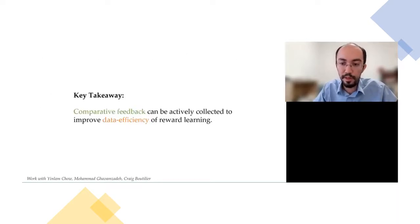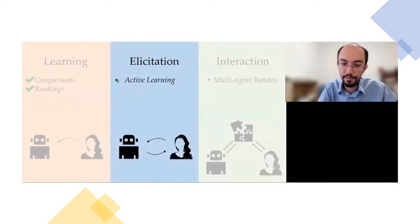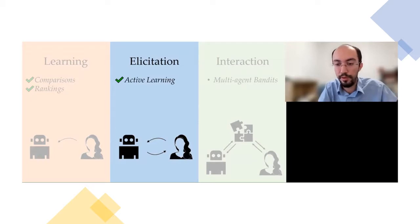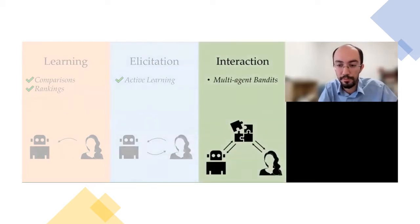The key takeaway is that comparative feedback can be actively collected, and we can use different acquisition functions depending on our objective. So we've seen how active preference-based learning can help us better learn models of human behaviors, rewards, or policies. Lastly, I want to very briefly mention some of our works on online planning and interaction, where we use other agents' learned models to decide our actions in multi-agent systems.